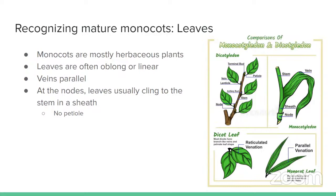Another thing we're going to notice about our monocot is at the nodes — where the leaves are coming out, those leaves are going to cling to the stem in kind of a sheath. You can see how it's kind of holding fingers around the stem and holding onto it. That's different from when we were looking at dicot twigs, which had a petiole, maybe a little axillary bud, and a leaf coming out with a little stock — that petiole — so it's kind of separate, and you can imagine it snapping off. When you're looking at a monocot, you'd have to kind of peel it — that's another indication you may be looking at a monocot.